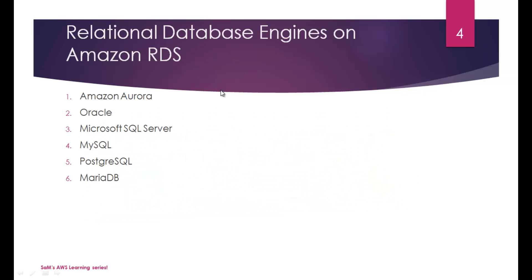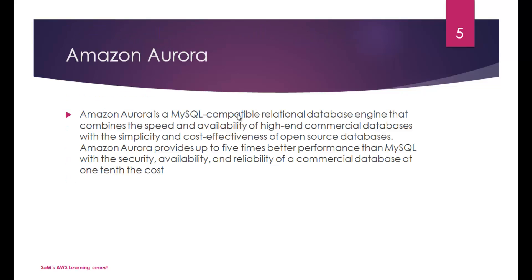Amazon supports six different RDS offerings: Amazon Aurora, Oracle, Microsoft SQL Server, MySQL, PostgreSQL, and MariaDB. Let's take a look at each of these database engines supported by Amazon.